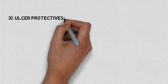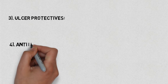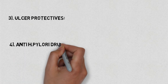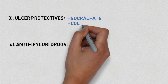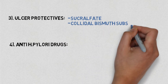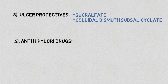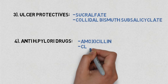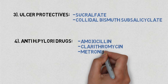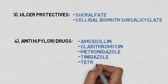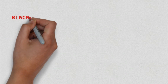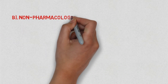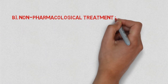Number three and number four of pharmacological treatment: we have ulcer protectives and anti-H. pylori drugs. The ulcer protective drugs are sucralfate and colloidal bismuth subcitrate. Whereas in number four, anti-H. pylori drugs, the drugs that fall under this category are amoxicillin, clarithromycin, metronidazole, tinidazole, and tetracycline. This finishes the pharmacological treatment.